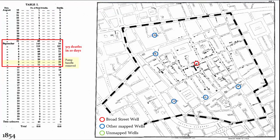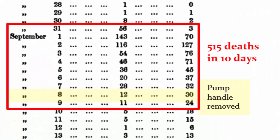In September 1854, Dr. Snow became aware of a cholera outbreak in the Soho district of London — the area shown here with the dashed line. Cholera is a really infectious waterborne disease that can literally kill in hours. People would say goodbye to their loved ones in the morning and not make it home for dinner that night. During the outbreak, 515 people died in just 10 days.